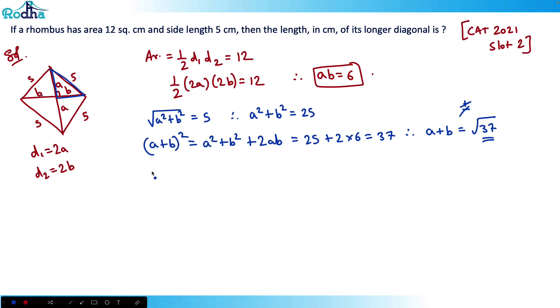What is (A-B)² guys? That is A² plus B² minus 2AB. So A² plus B² is again 25 minus 2 into 6 is 13. Therefore A minus B is equal to root 13.